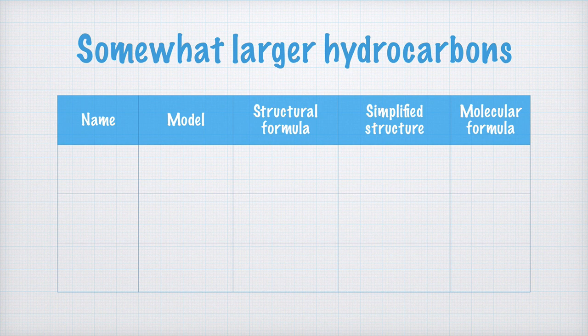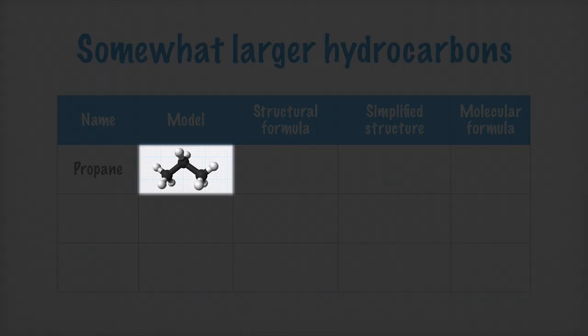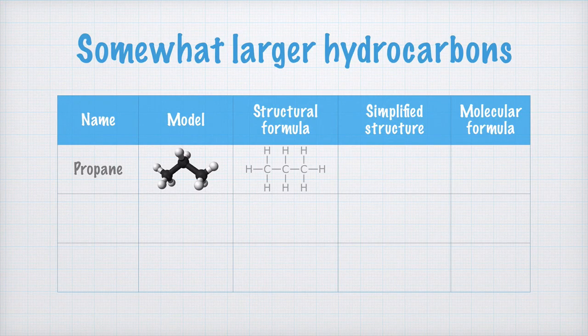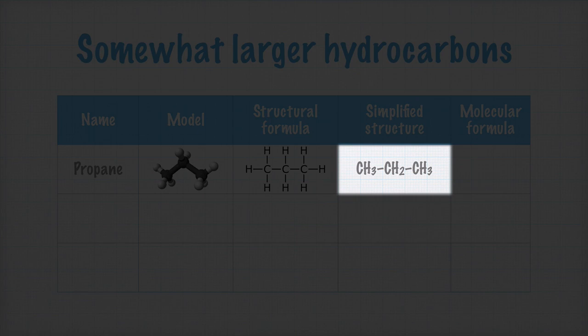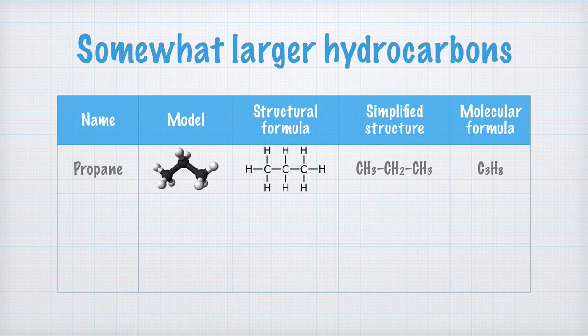If we have three carbon atoms linked together, like in this molecule, it's called a propane molecule. Since we have three carbon atoms bound to each other with covalent bonds in the model, we can write its structural formula like this. Sometimes you don't have access to a molecular drawing app, or sometimes you just want to write the structure really quickly. Then you can use a simplified structure like this: CH3CH2CH3. If we add up all the atoms in the molecule, we get the molecular formula C3H8.